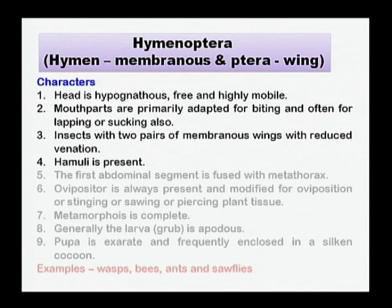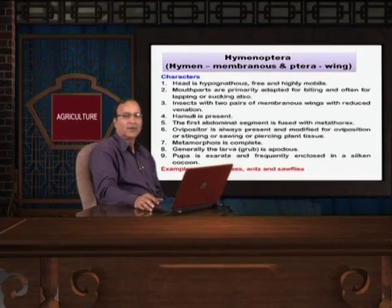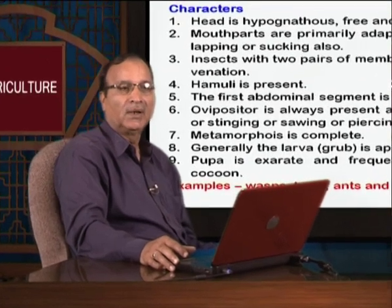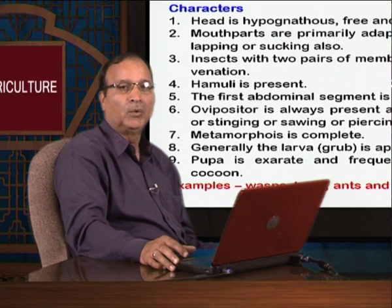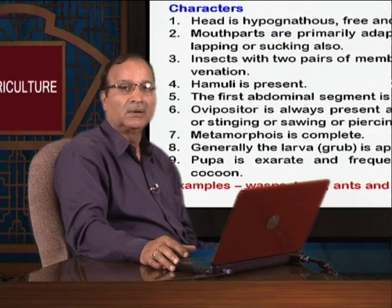Hamuli are present. Hamuli is a wing-coupling mechanism which helps the insect to cover more distance. In the case of hamuli, hook-like structures are borne on the hind wings which fit into the fore wings, thereby forming a single unit of both wings. The first abdominal segment of the insect body is fused with the metathorax — it is completely fused with the third segment of the thorax.